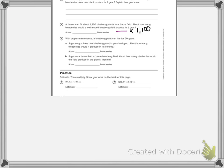Problem five says with proper maintenance a blueberry plant can live for 20 years. Suppose you have one blueberry plant in your backyard. About how many blueberries will it produce in its lifetime? So again, you're going to take your answer from number three, which is purple, and multiply that by 20 years.